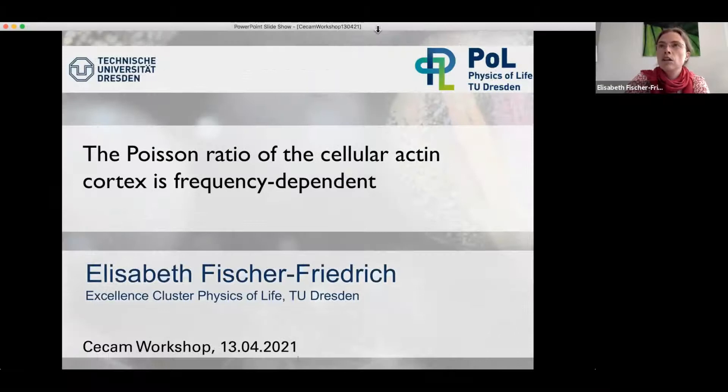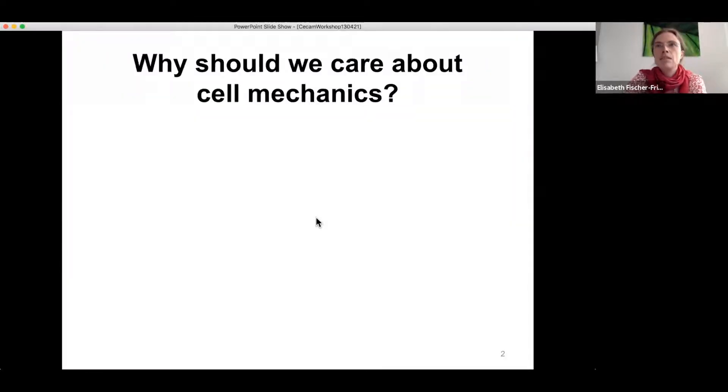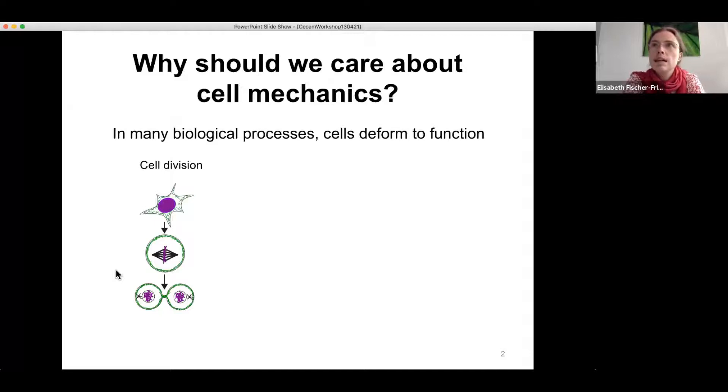So I want to speak about our work on the mechanics of the actin cortex of cells, in particular about the measurement of the Poisson ratio of the actin cortex. But let me maybe start by motivating why we should actually care about cell mechanics. And the reason for this is that many biological processes require that cells are actually deforming. And here are a couple of examples.